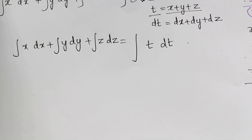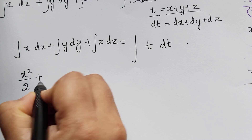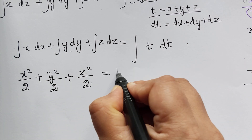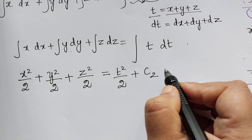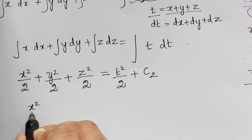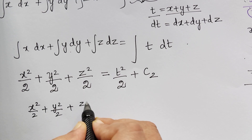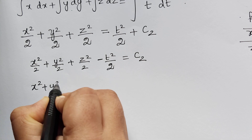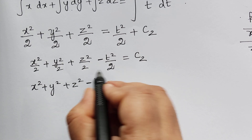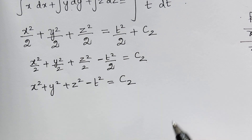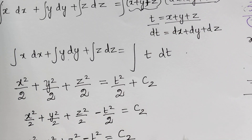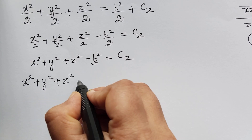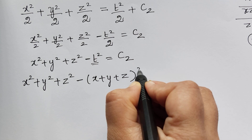Integrating: x squared over 2 plus y squared over 2 plus z squared over 2 equals t squared over 2 plus constant c2. Taking t squared over 2 to the left and multiplying through by 2: x squared plus y squared plus z squared minus t squared equals c2. Substituting t equals x plus y plus z: x squared plus y squared plus z squared minus (x plus y plus z) squared equals c2.